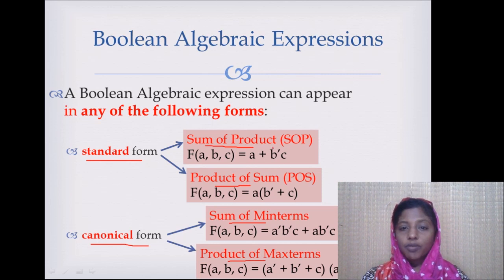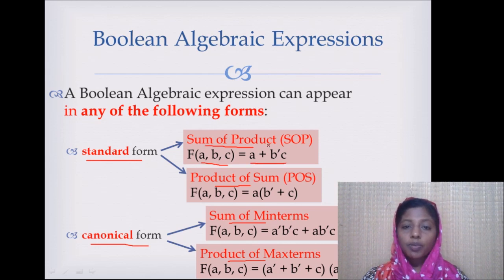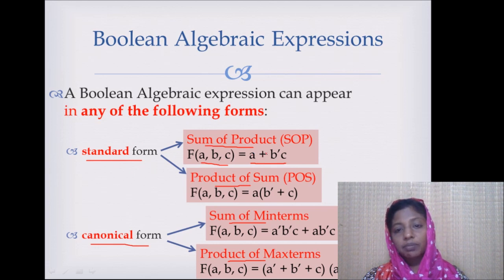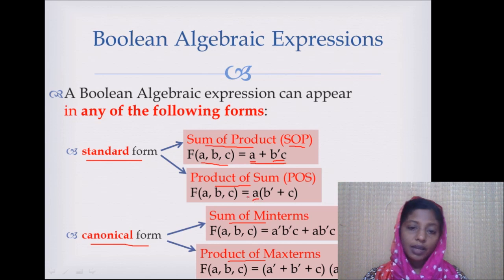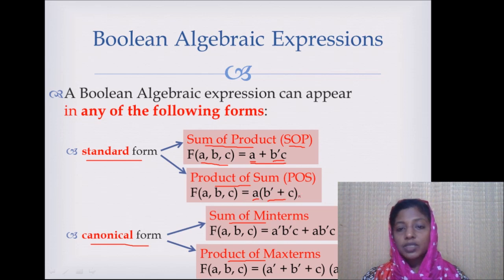Consider this example: f is a function with three inputs a, b, and c, and this expression is represented in sum of products in standard notation. We have a plus b̄c. Each sub-expression is a product and we have a sum of those products — that is why it is called SOP, sum of products. The product of sums form has sums as elements with products between them, so it is called product of sums.